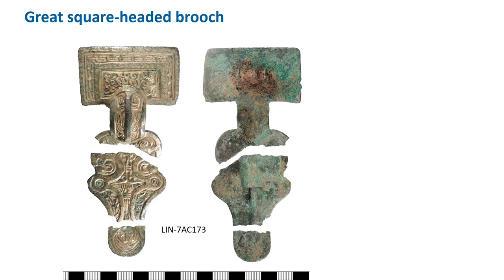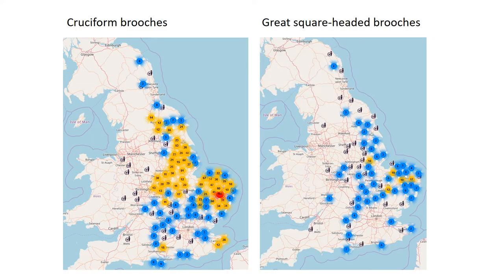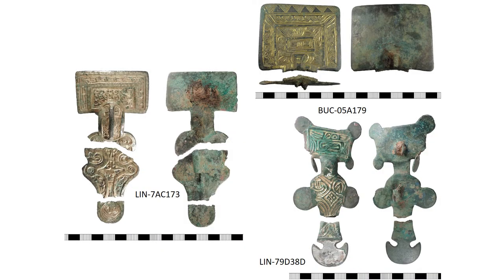Now we'll move on to the great square headed brooch, which is also a very standardised and easily recognisable brooch type. John Hines's book is the best source for these but can be expensive; alternatively you could look at records of similar brooches on the PAS database. We've recorded nearly 300 of the great square headed brooches onto the PAS database, and they occur in roughly the same parts of the country as the cruciform brooches, with a concentration in the Anglian area. Like the cruciform brooches, they tend to break up very easily into fairly recognisable fragments.